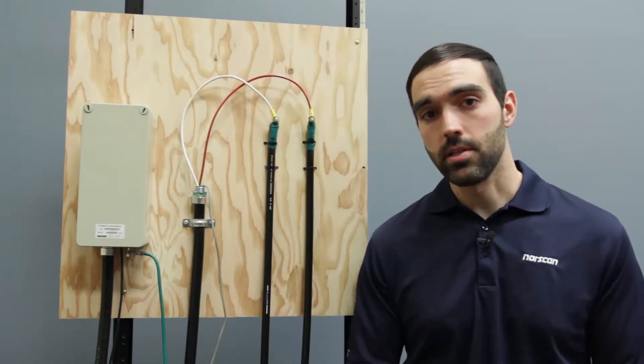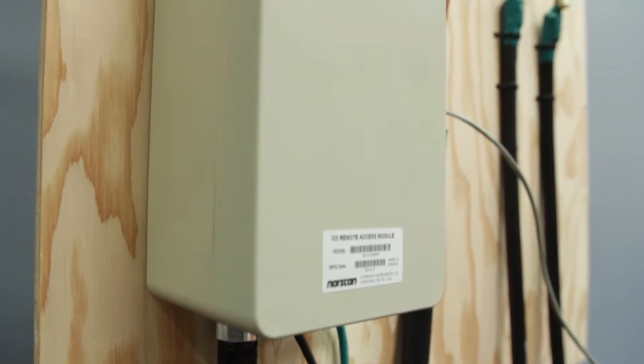So let's begin by physically installing your CoRAM. Install your CoRAM vertically on some fire rated plywood above the vault cabinet.